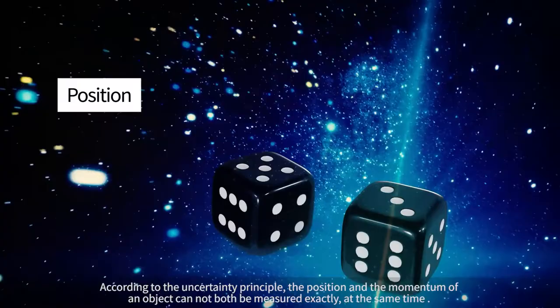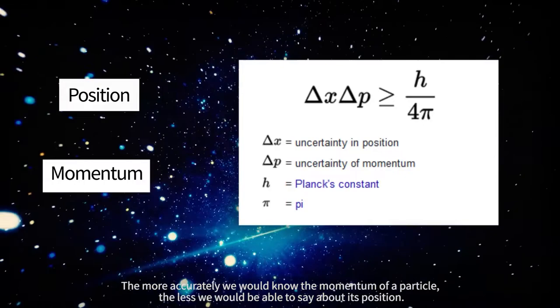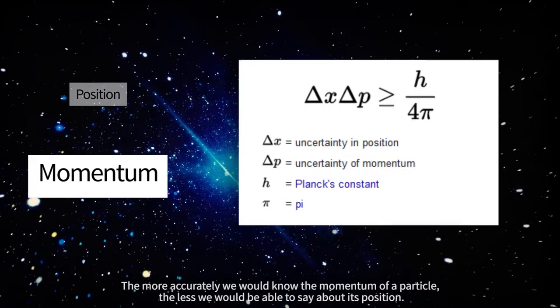According to the uncertainty principle, the position and momentum of an object cannot both be measured exactly at the same time. The more accurately we know the momentum of a particle, the less we would be able to say about its position.